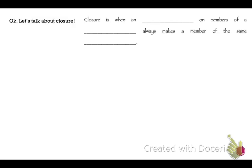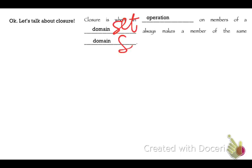Closure is when an operation on a member of a domain always produces a member of the same domain or group. A domain is a set of numbers — so this could also be called a set.